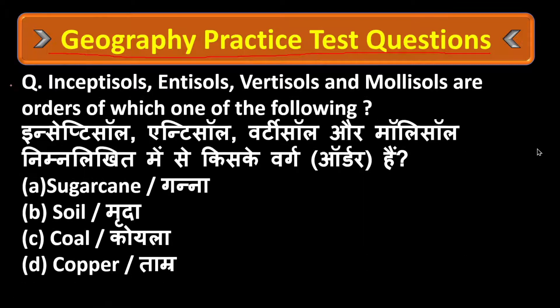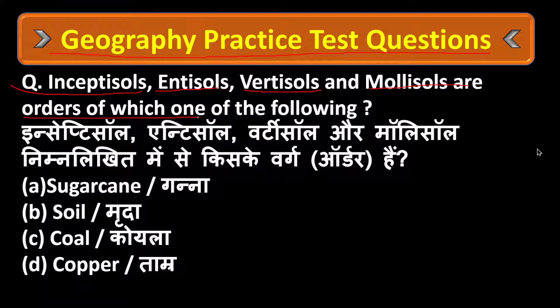Geography Practice Question: Gelisols, Andisols, Vertisols, and Mollisols are in order of which one of the following? Option A, Option B, Soil. Option C, or Option D, Copper.